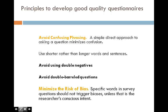There are several principles we can use to develop quality questionnaires. Number one is to avoid confusing phrasing. The best way to do this is to use a simple, direct approach, which can minimize confusion. We should always use shorter rather than longer words and sentences, and we should also avoid using double negatives.